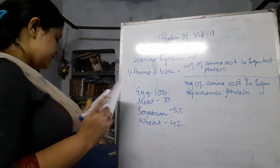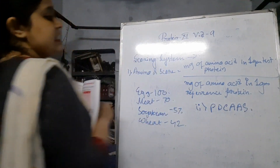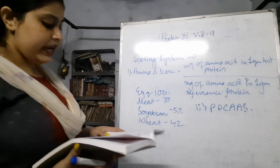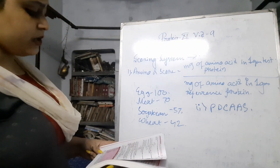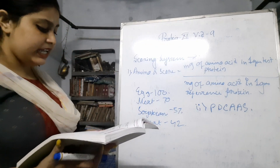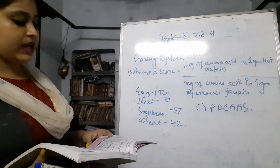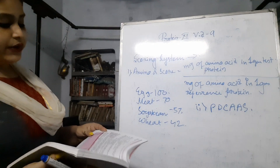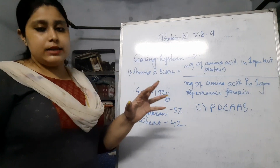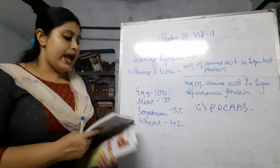So the next piece is PDCAAS — Protein Digestibility Corrected Amino Acid Score. It is the official method of evaluating the quality of protein. After correction of digestibility, it provides the amino acid equal to the excess amount of the requirement. The PDCAAS value is about 1. You only have to learn the name and know what it is — not more than that.